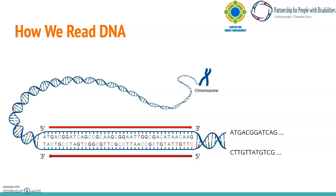Today, we will start with how we read DNA. It's similar to if you were to learn a new language with a different set of characters, like Russian, Japanese, or Arabic — we need to know where to start and what direction to read. Here is the same image from our first lecture with some directions on how we read DNA. DNA has what we call a 5' and 3' end. These terms come from biochemistry, but it's not really that important.